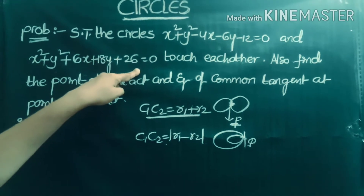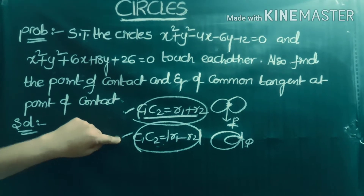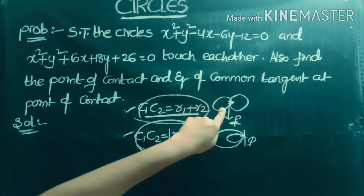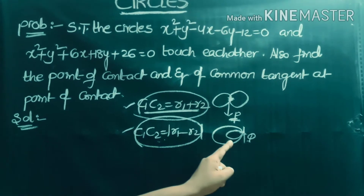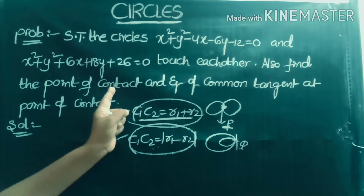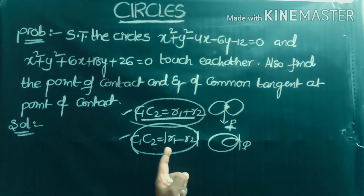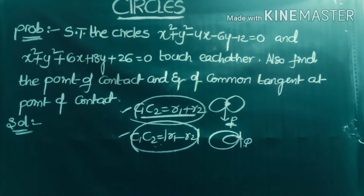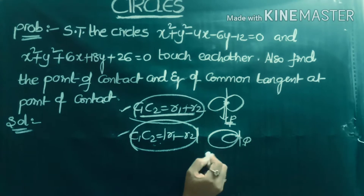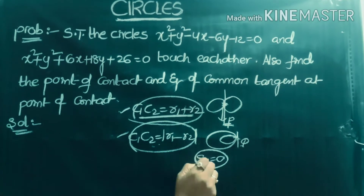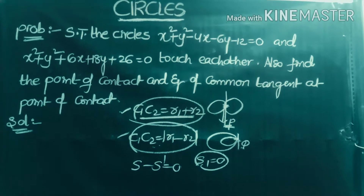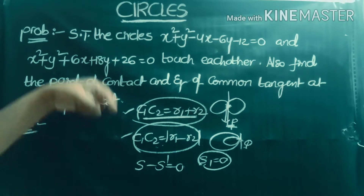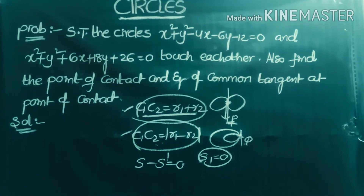First, we find the centers and radii of the given circles c1, c2, r1, r2. Then we check which condition is satisfied. If c1c2 = r1 + r2, the circles touch externally; otherwise they touch internally. For the point of contact, we find p or q accordingly. The equation of the common tangent uses the shortcut formula s - s' = 0, where s is the first circle and s' is the second circle.